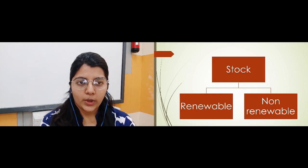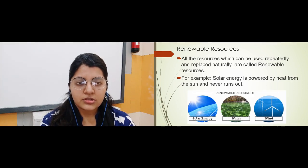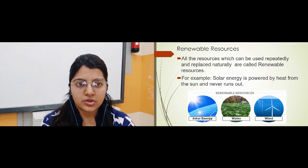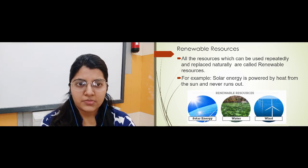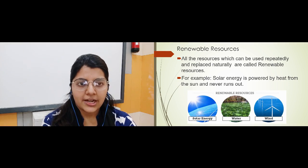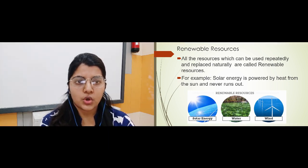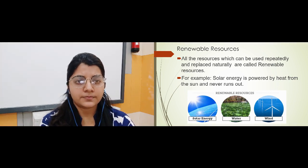Now we move to the third part: on the basis of stock, we have two parts — renewable resources and non-renewable resources. Renewable resources are those available in unlimited quantity that do not get exhausted and can be reused over time — resources that can be replaced naturally. For example, sunlight: the light given by the sun is never-ending; we will get it not just today but for our whole life. So sunlight is part of renewable resources.